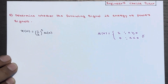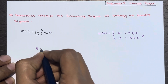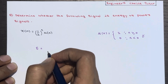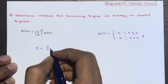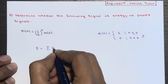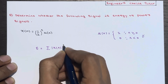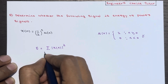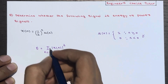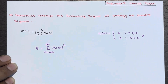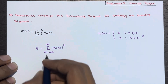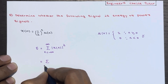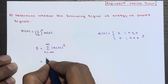Now let's move further and calculate the energy. The energy E of a discrete time signal x(n) is defined as the summation of the absolute square of x(n) over the limit n ranging from minus infinity to plus infinity. This is the formula to calculate the energy of a discrete time signal.